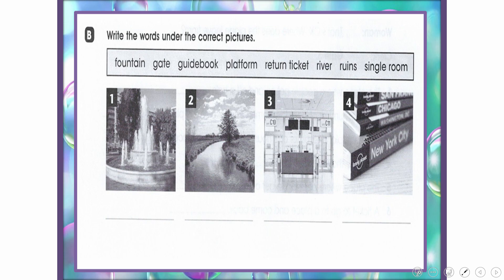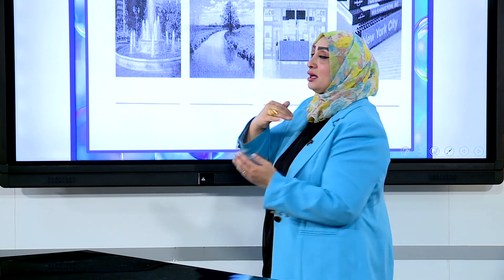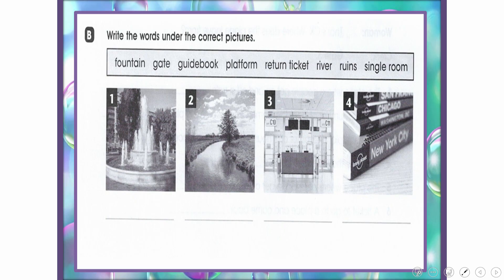Exercise B: Write the words under the correct picture. The vocabulary includes: fountain, gate, guidebook, platform (associated with trains), return ticket, river, ruins, and single room (a room with one bed).